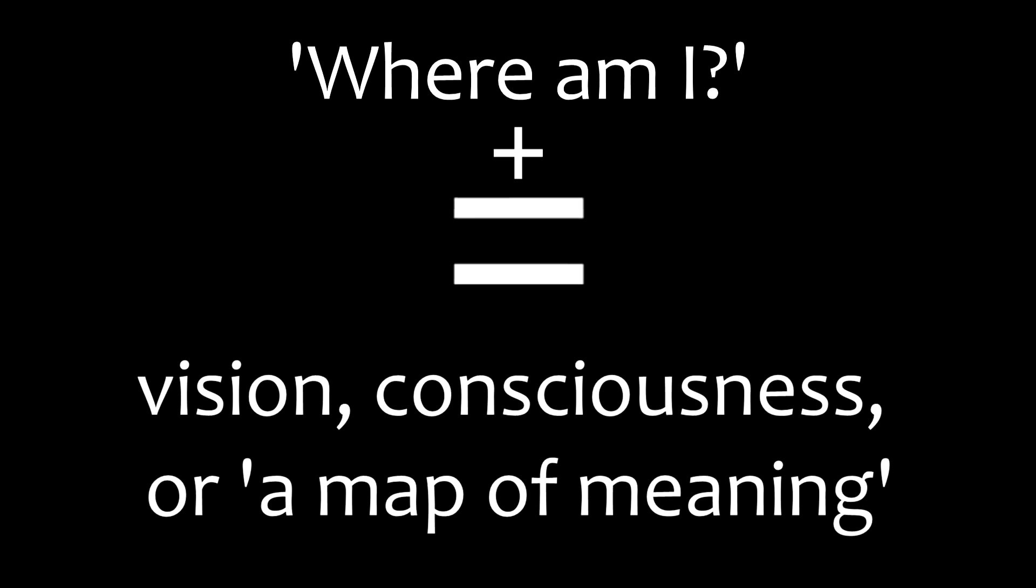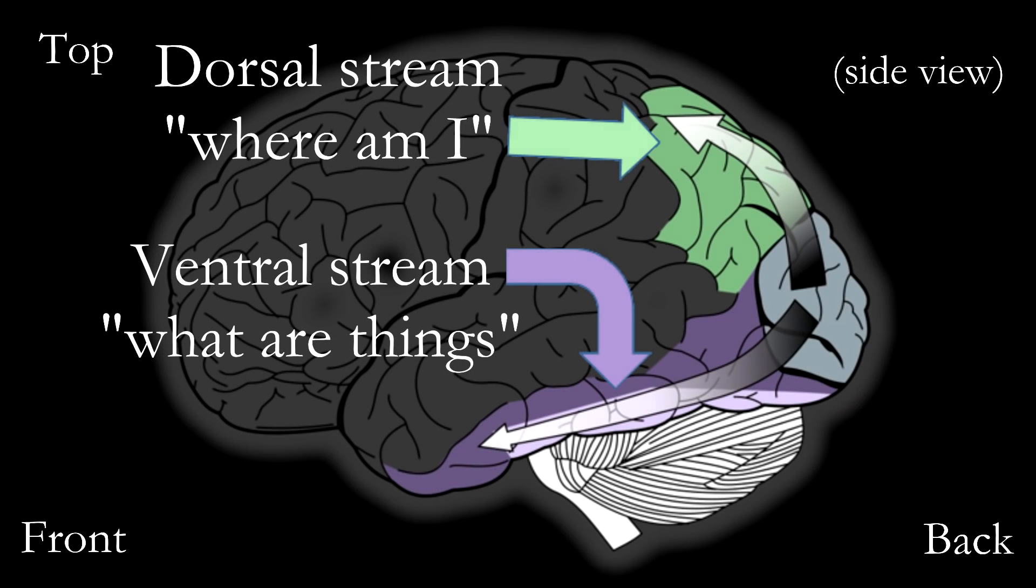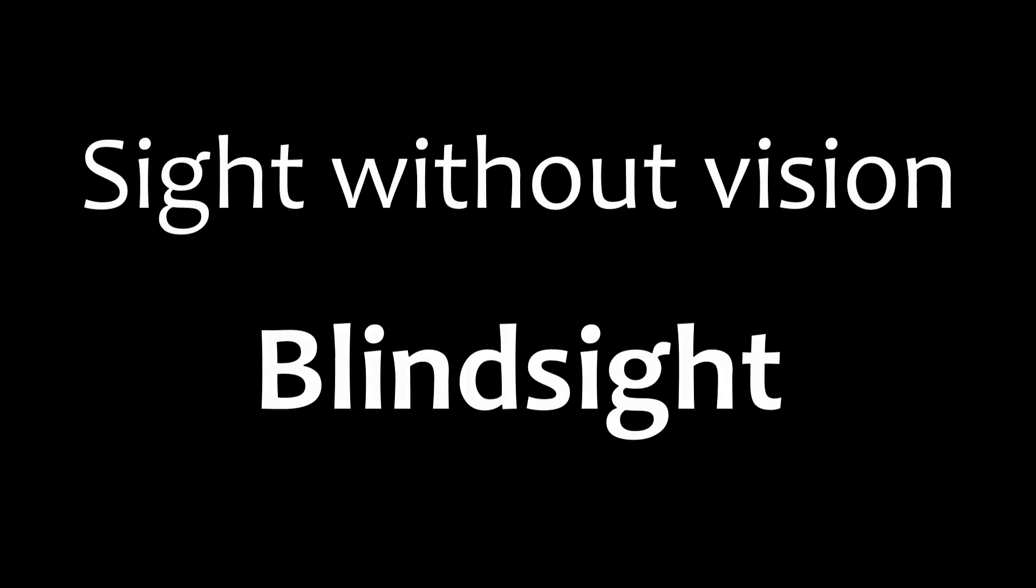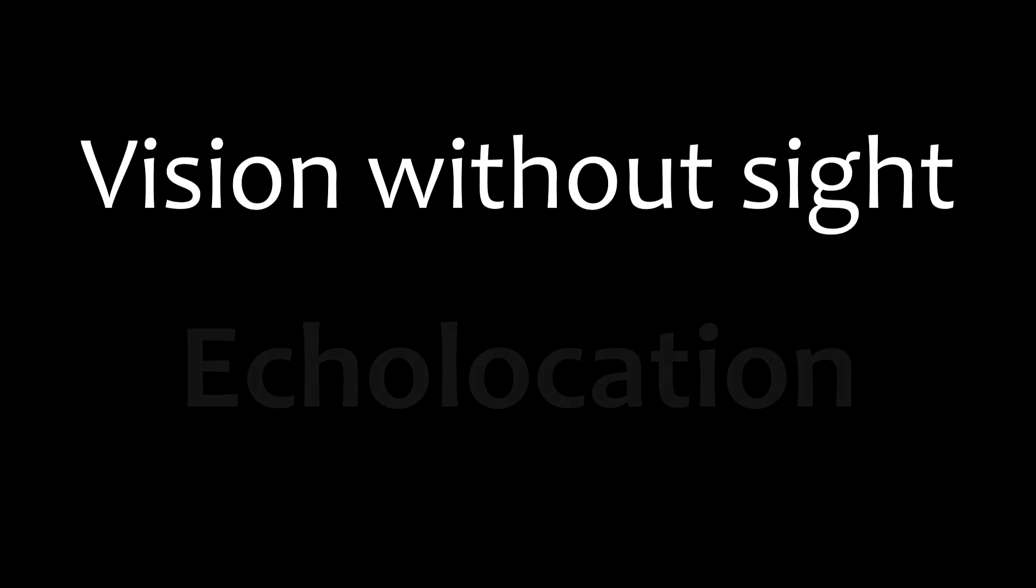It is only when we integrate this unconscious relational model with semantic descriptions that we get a mental image, or conscious vision. And if we refer back to the model of the dorsal and ventral information streams, we can see that both of them originate from the visual cortex. Not only is vision unnecessary for sight, but sight is not required for vision. A beautiful example of this is human echolocation.